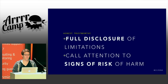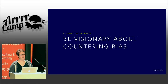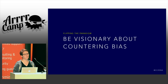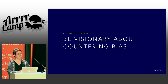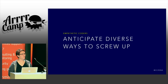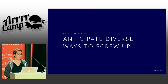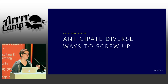We need to provide others with full disclosure of limitations and call attention to signs of risk or harm to others. We need to be visionaries about creating more ways to counteract bias — biased data, biased analyses, biased impacts. And we need to anticipate diverse ways to screw up. When teams are charged with defining data collection, data use, and data analysis, if they're less diverse than the intended user base, we're going to just keep on failing them.